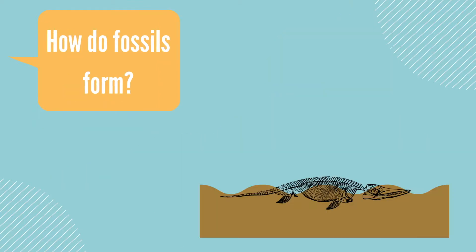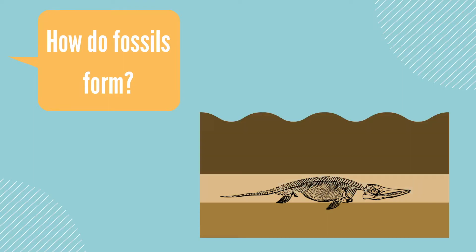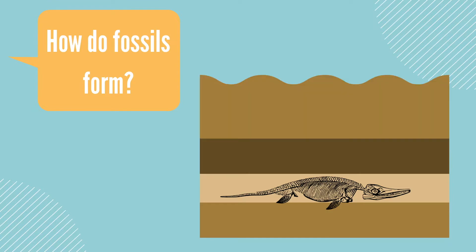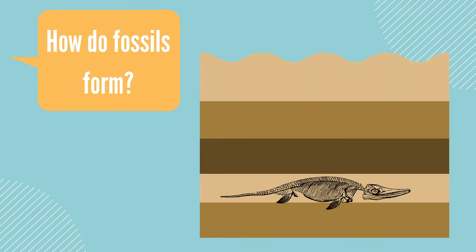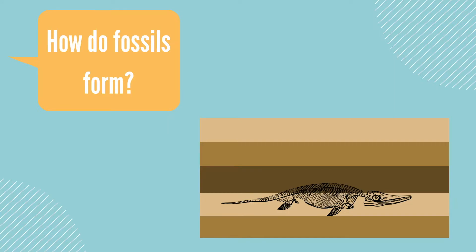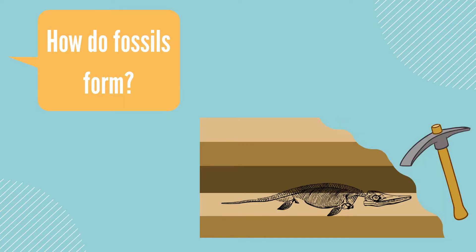Now that we know what a fossil is, how do fossils form? Normally when an animal dies, it doesn't leave anything behind. But if the animal gets buried very quickly after death with mud or sediment, the overlying sediment will become rock and their bones will harden. Fossils can then be exposed when the rock is eroded over time, and scientists like paleontologists can then discover them.